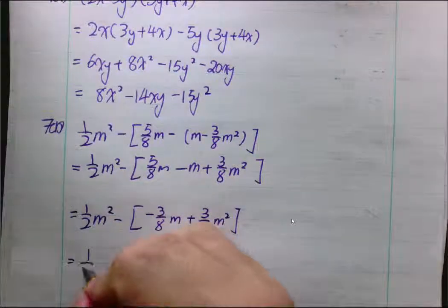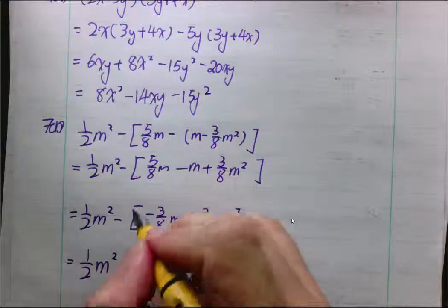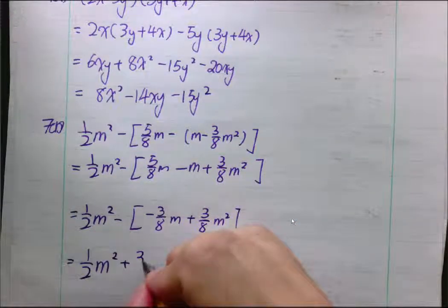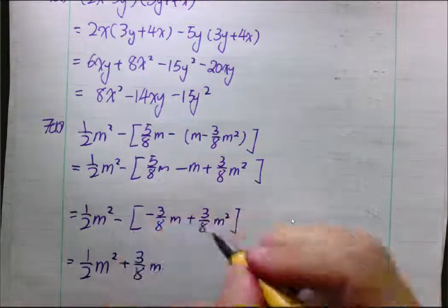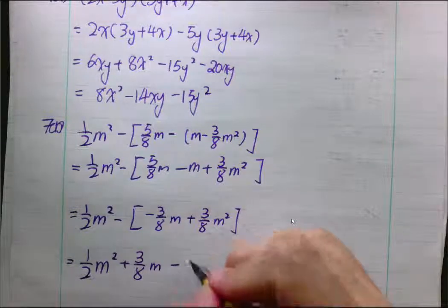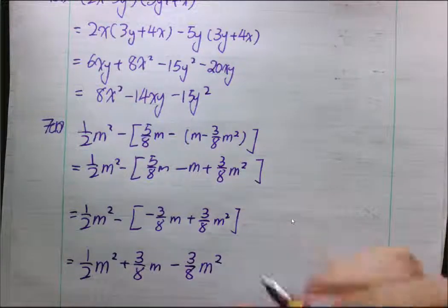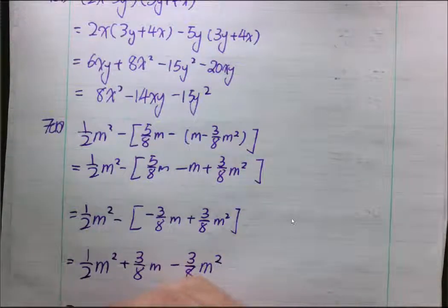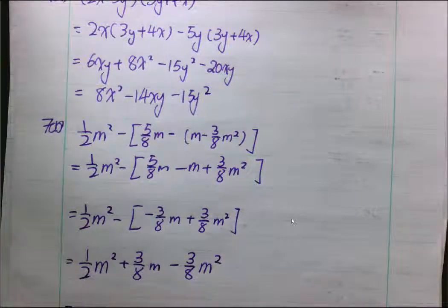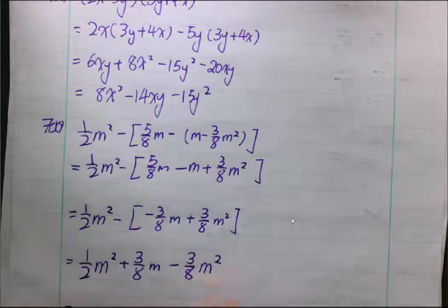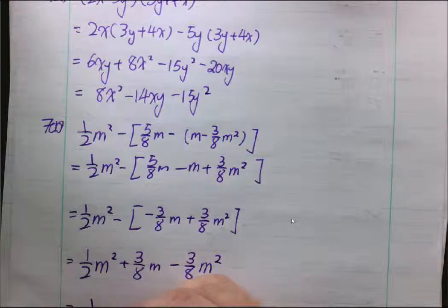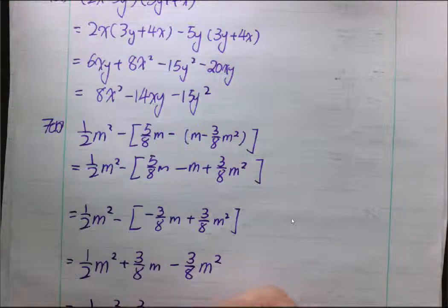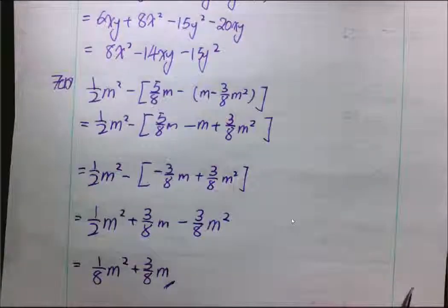Then, we open the bracket one more time. Negative 1 times this gives me positive 3 over 8m. Negative times this positive gives me negative 3 over 8m². So, now, we simplify half minus 3 over 8 would give me 1 over 8m² plus 3 over 8m. And, that concludes the corrections for common test 1.